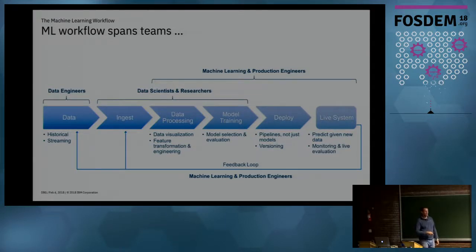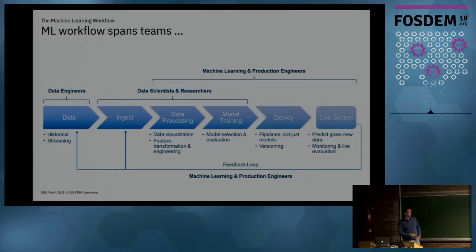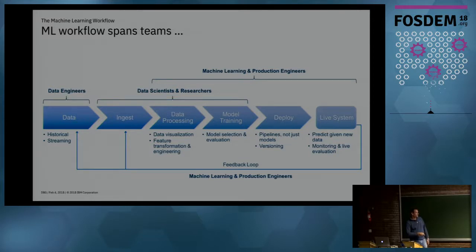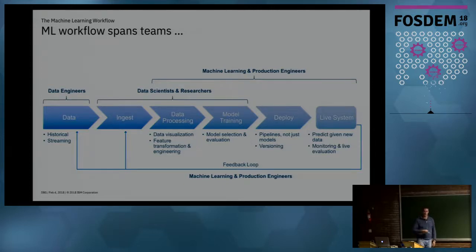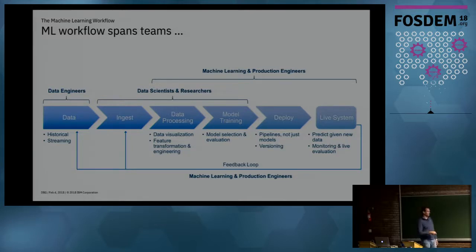Once they're done, they tend to throw it over the wall and say 'here's my model written in R or Python, you need to deploy it.' You need to take this entire workflow into production with all the requirements for scalability, uptime, speed, performance, and monitoring. It's not just the model you deploy — you need to deploy the entire workflow of pre-processing steps, feature engineering, and data cleaning. And then you have to worry about versioning — which version of the model are you deploying, have the features changed?